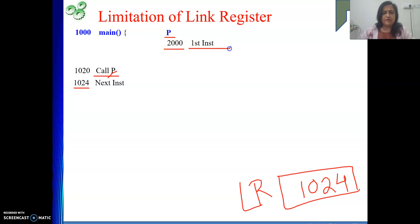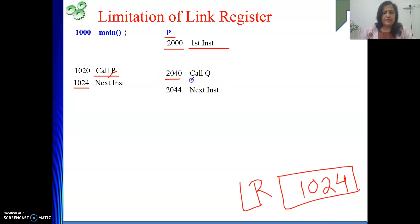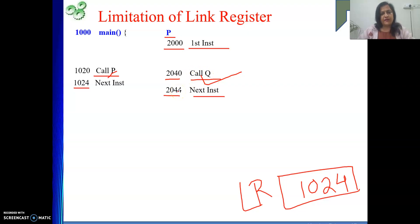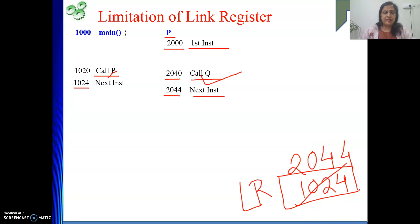At 2000, the first instruction of the subroutine is there and we continue. Let's say inside P, again we are calling another function Q. At address 2040, a call Q instruction is there, meaning we are going to call another function named Q. The next instruction after that is at 2044. When we execute call Q, we store the return address — that is 2044 — into the link register. This value overwrites the previous content, so the link register now holds 2044.